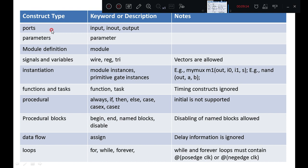Looking at Verilog constructs for synthesis: Ports use keywords input, inout, and output. Parameters use the keyword parameter. Module definition uses the keyword module in Verilog. Signals and variables include wire, register, and tri-state; vectors are also allowed. For instantiation, module instances and primitive gate instances are used. Module instances are user-defined modules for gate level implementation. For example, if implementing a full adder as a top level module, a half adder can be a lower level module instance, and an OR gate would be a primitive gate instance.